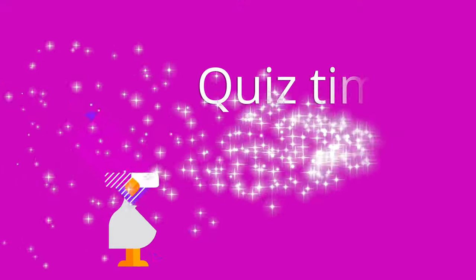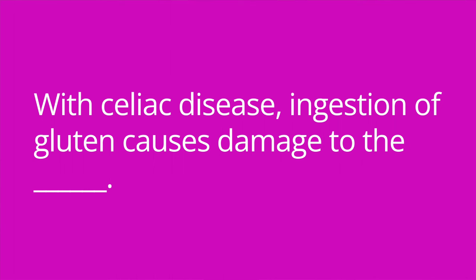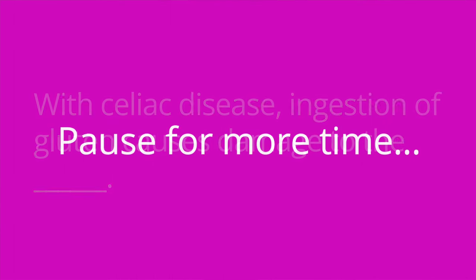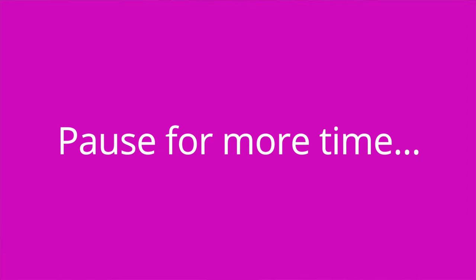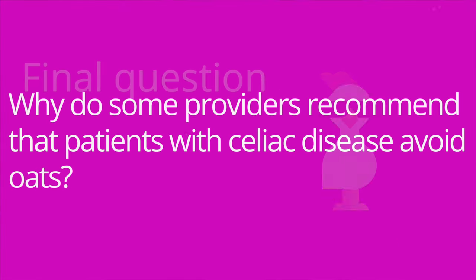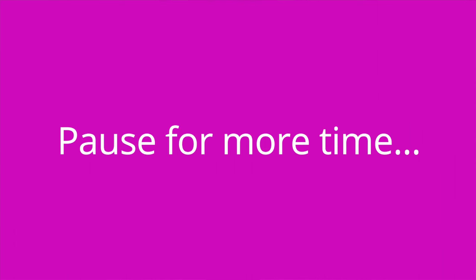It's quiz time — three questions. Question one: with celiac disease, ingestion of gluten causes damage to the what? The answer is the small intestine, and specifically the villi in the small intestine. Question two: which grains contain gluten? The answer is barley, rye, and wheat. Question three: why do some providers recommend that patients with celiac disease avoid oats? The answer is because they are commonly processed in facilities that process gluten-containing grains, so the risk for cross-contamination is very high.